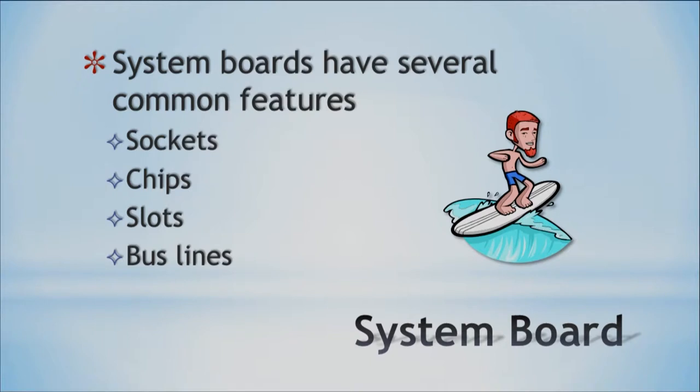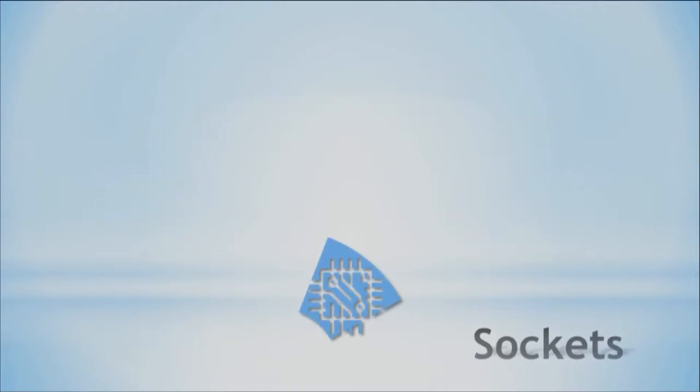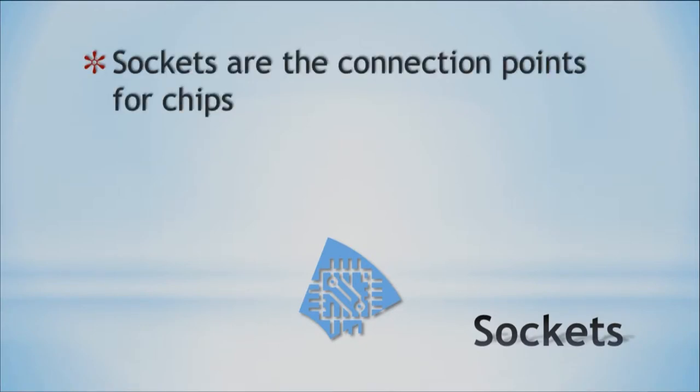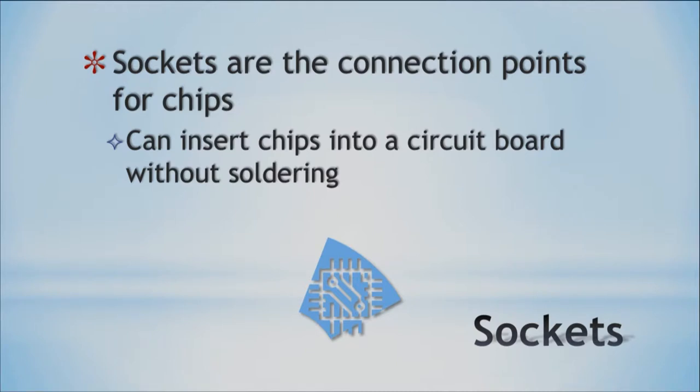With sockets, these are the connection points for your chips. You can insert chips into the circuit board without soldering, so it's really easy to swap out different chips. This supports a more modular design. Different parts are made in different parts of the world — your CPU might be made in Malaysia, other chips in Japan, bus lines in Europe — so companies find the cheapest place to make them and then snap them all into the circuit board.